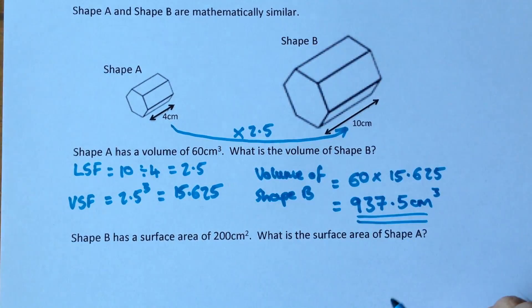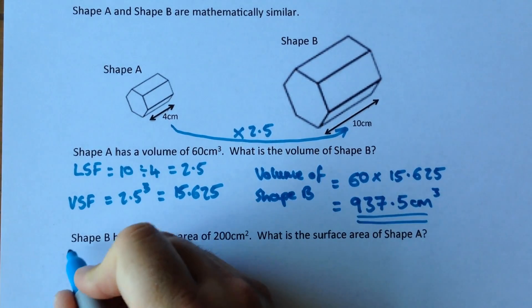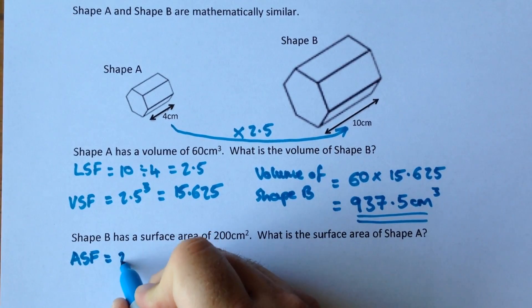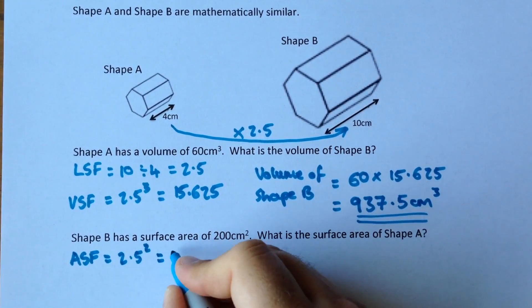So now we're working back that way which means we're going to be dividing instead of multiplying. And we're talking about surface area so we want the area scale factor which we can get by squaring the length scale factor, which gives us 6.25.